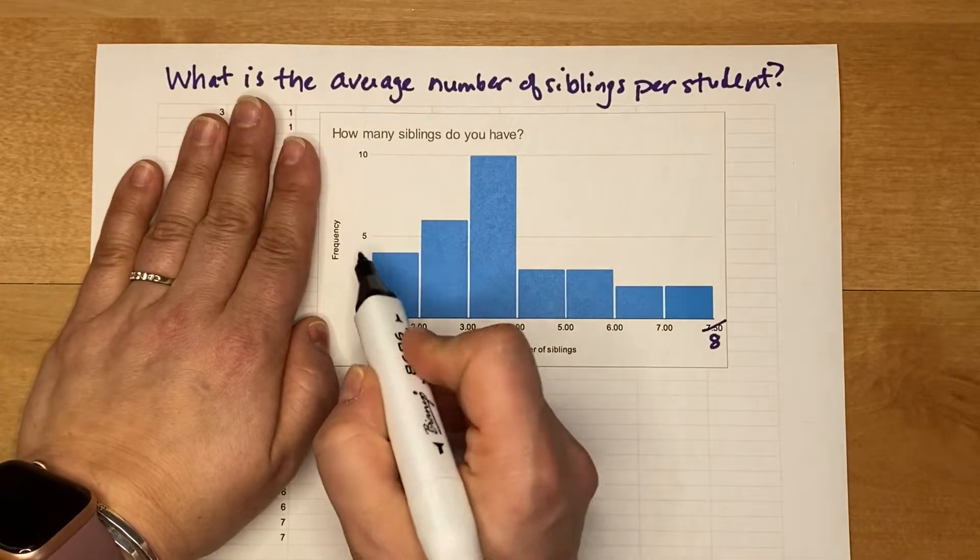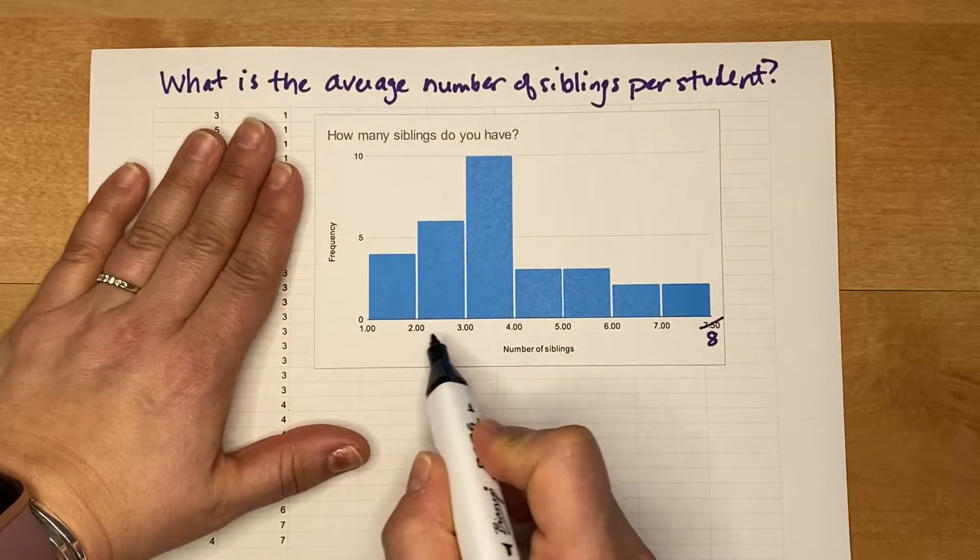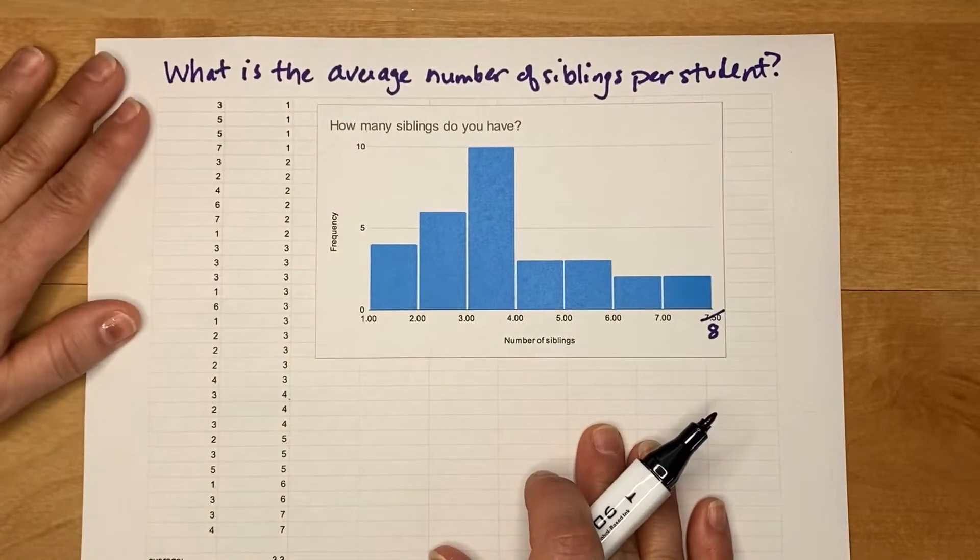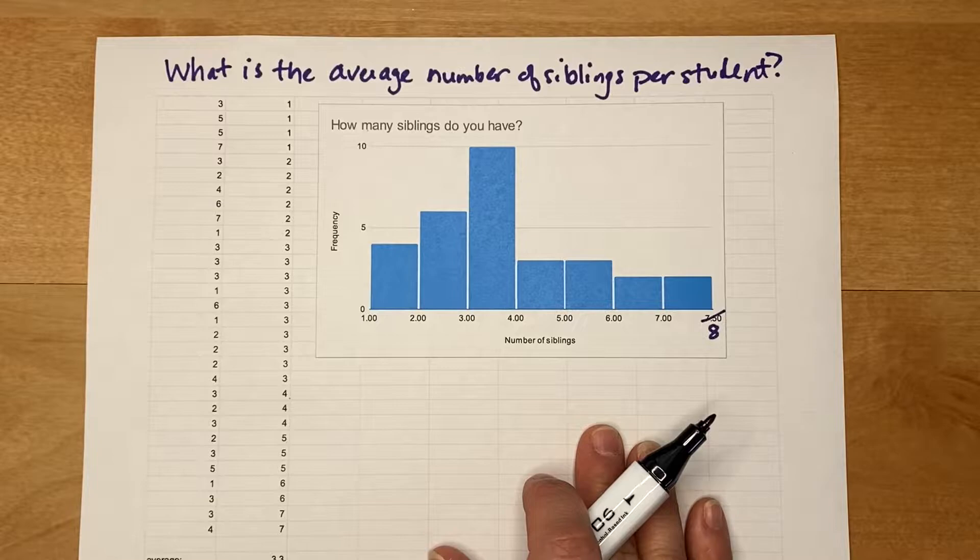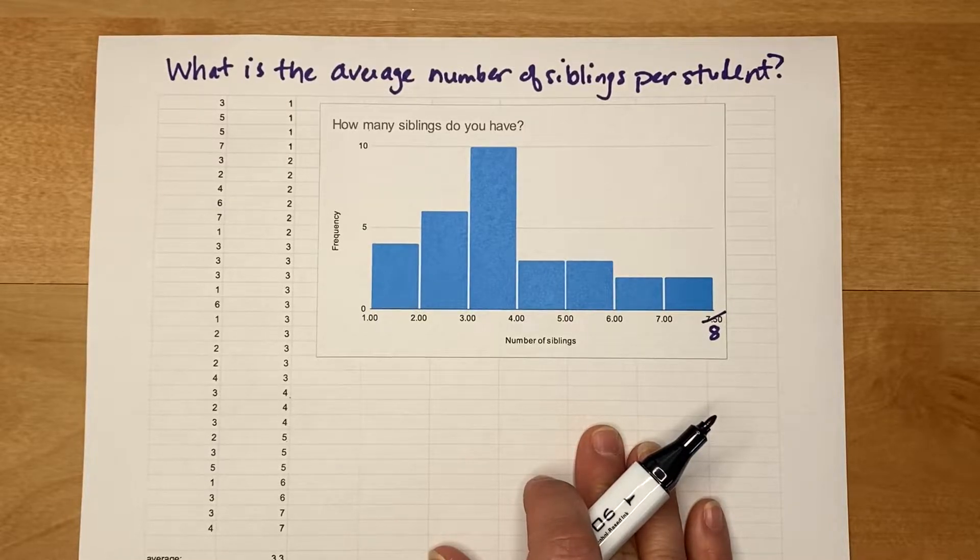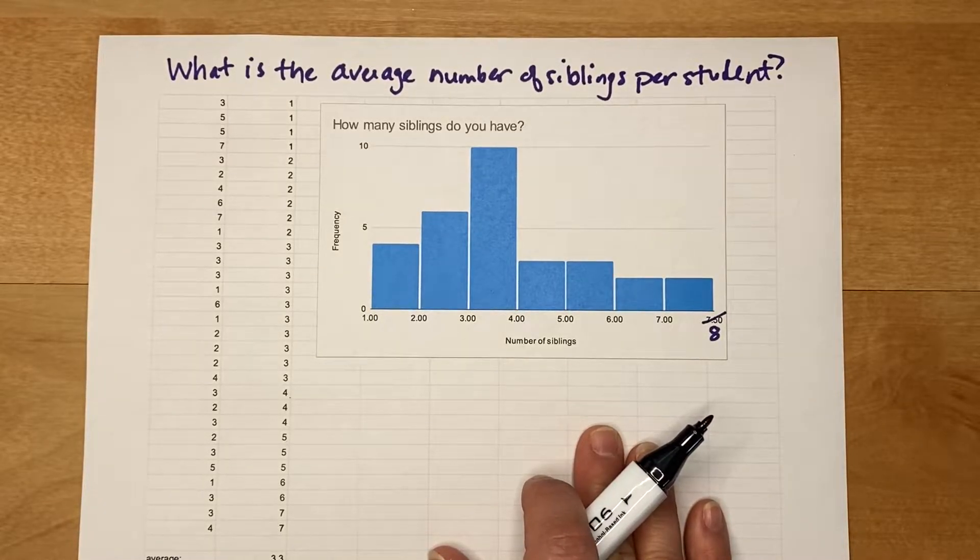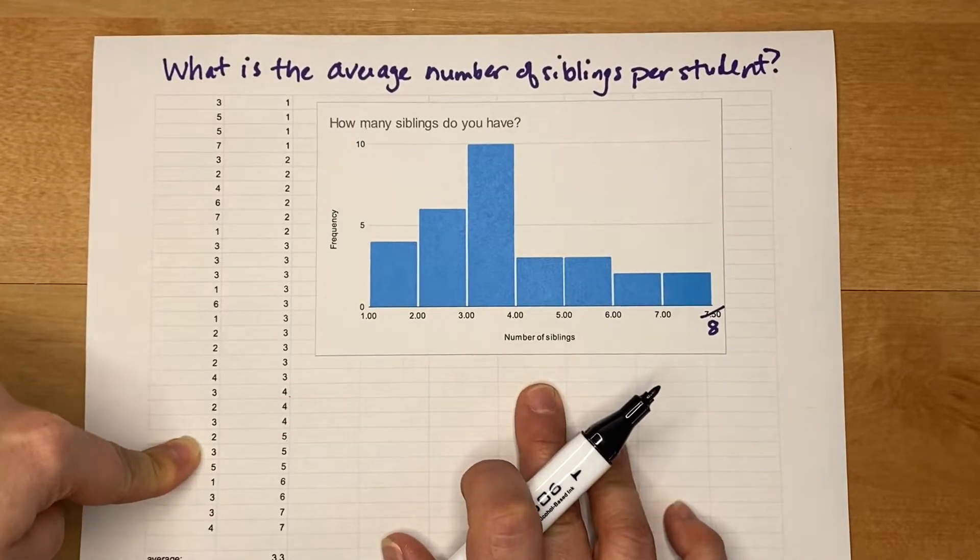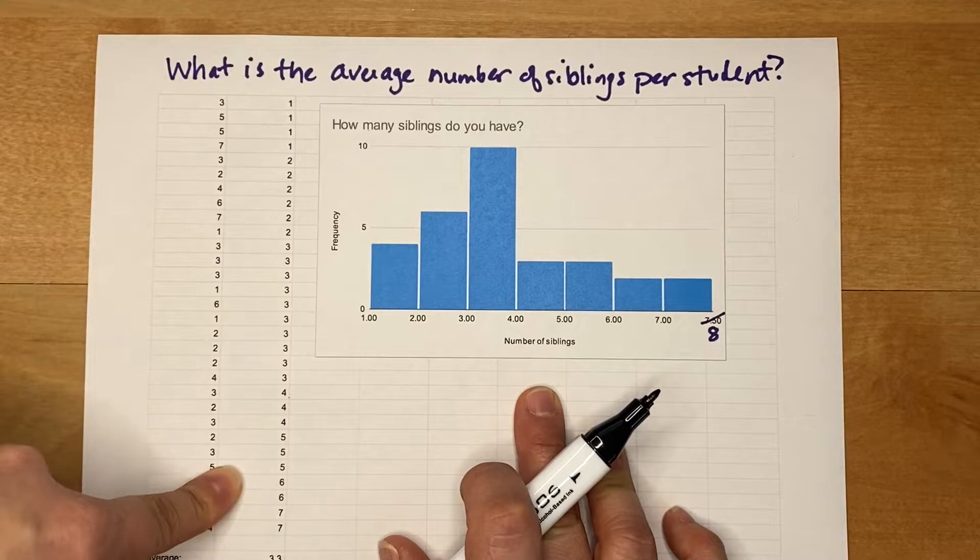By looking at the frequency as well as how many siblings each student has. So what I did was I sampled my students a couple of terms ago and I asked them how many siblings they had. I collected the data, and to make this graph I sorted the data and then I made a histogram.